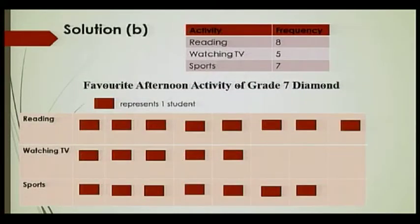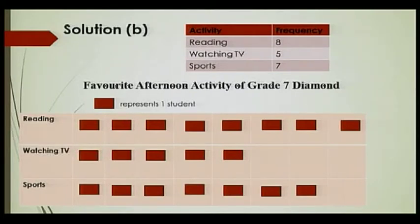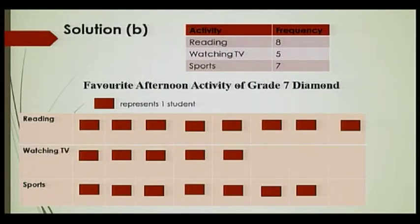Now we are going to use this frequency table to construct our pictogram. I am using a rectangle here to represent one student. For Reading we have eight students, so we should have eight rectangles. Watching TV we have five, so five rectangles. And for Sports we have seven, so seven rectangles. This is our pictogram. Don't forget you need to include the title: 'Favorite Afternoon Activity of Grade 7 Diamond'.